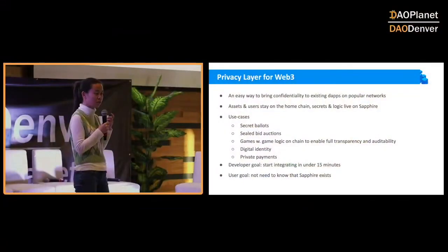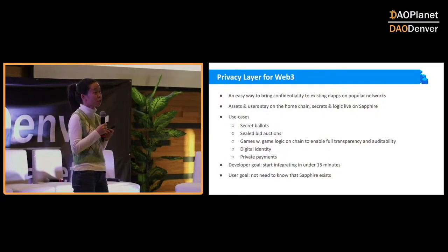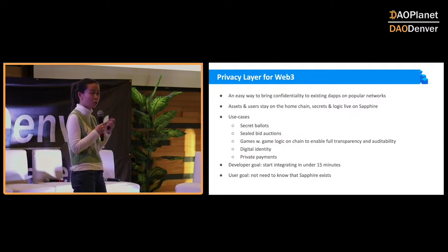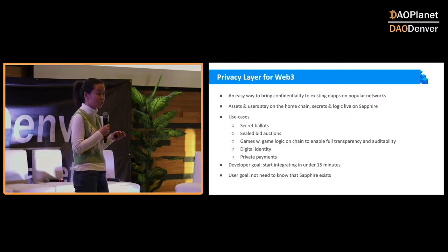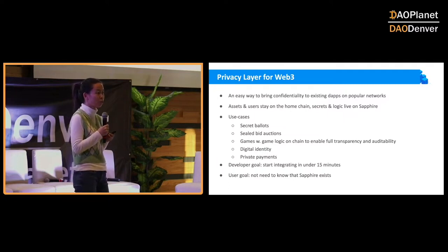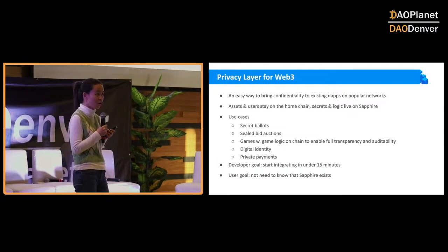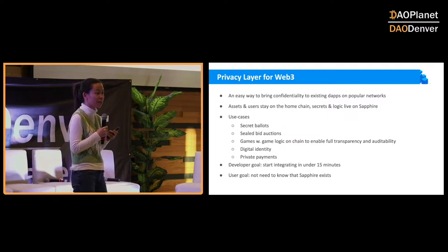What we mean by privacy layer for Web3 is this: a dapp — such as a DAO running on Ethereum — if you just want to use Oasis's private solutions for making the voting process private, you stay where you are. Ethereum is where your users are, users hold ETH, they don't necessarily want to hold other tokens required for gas on other networks. You stay where user liquidity is, where you solve users' problems, and you only use Oasis's private solutions for that specific problem — improving governance through a private voting process.